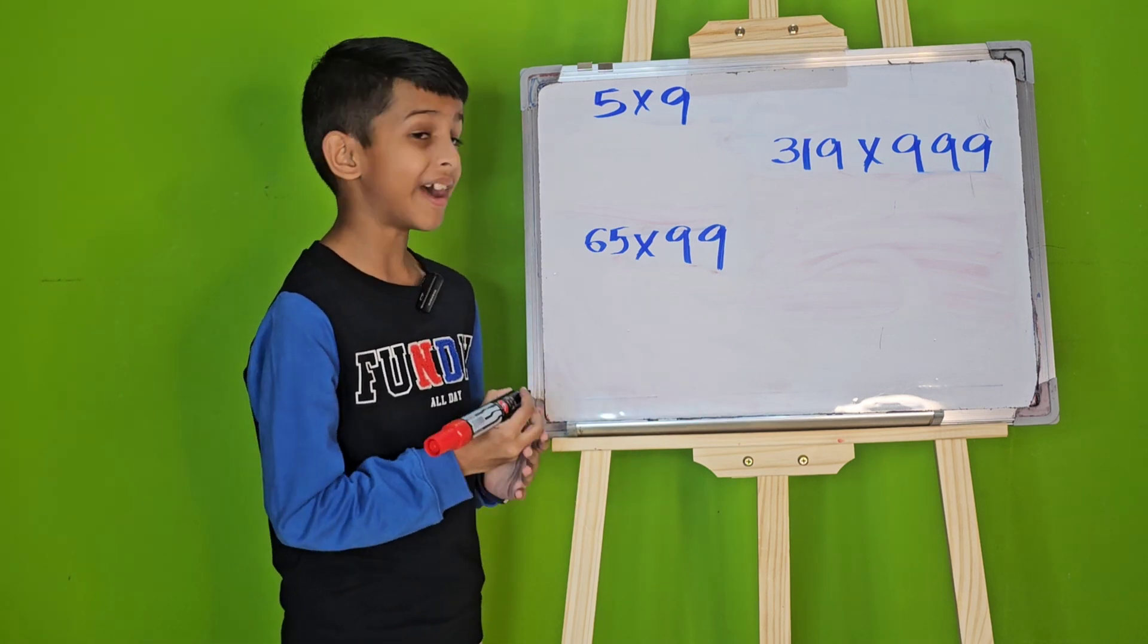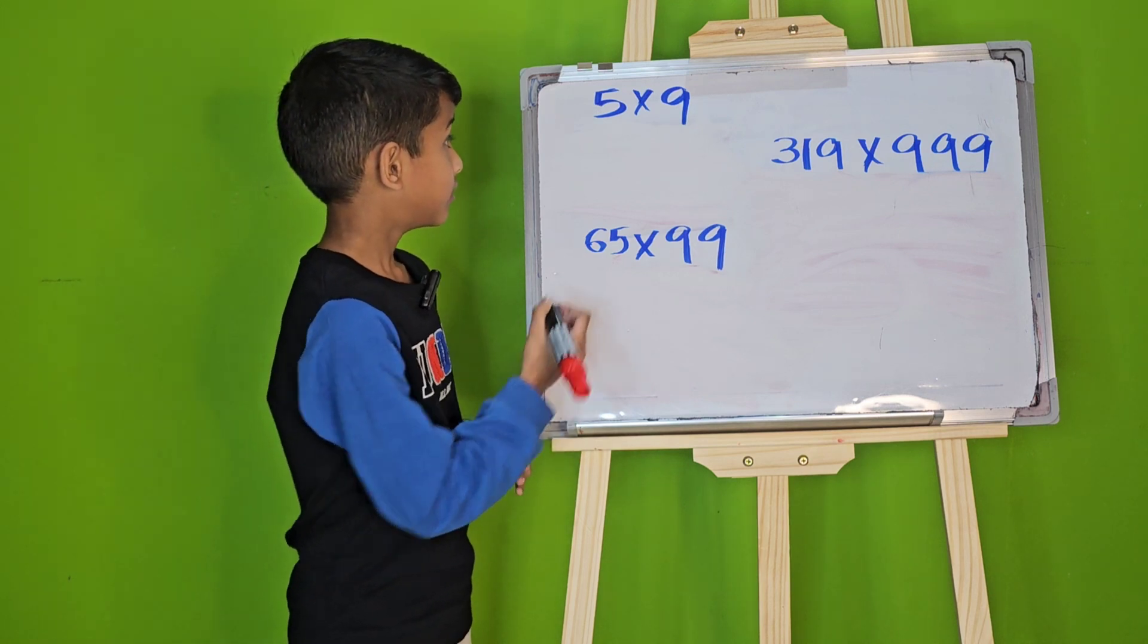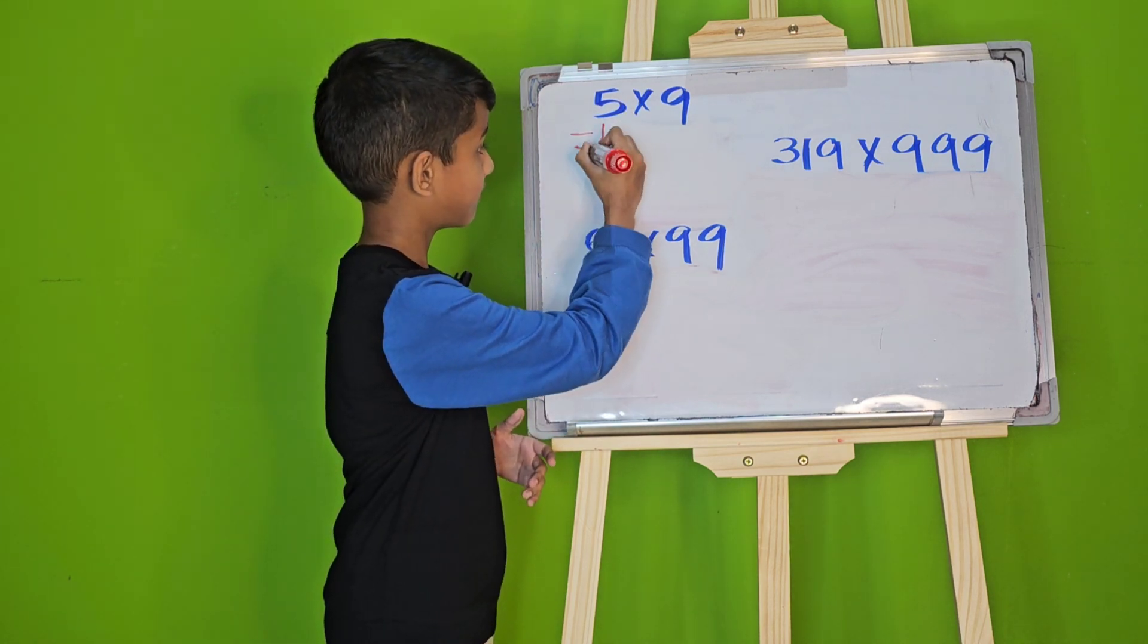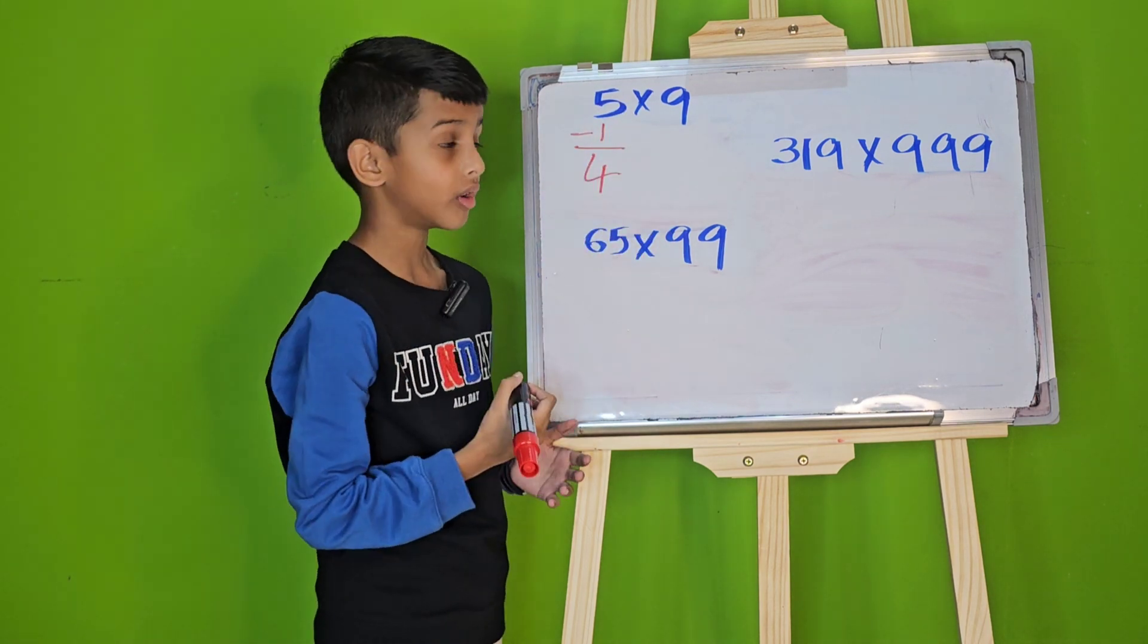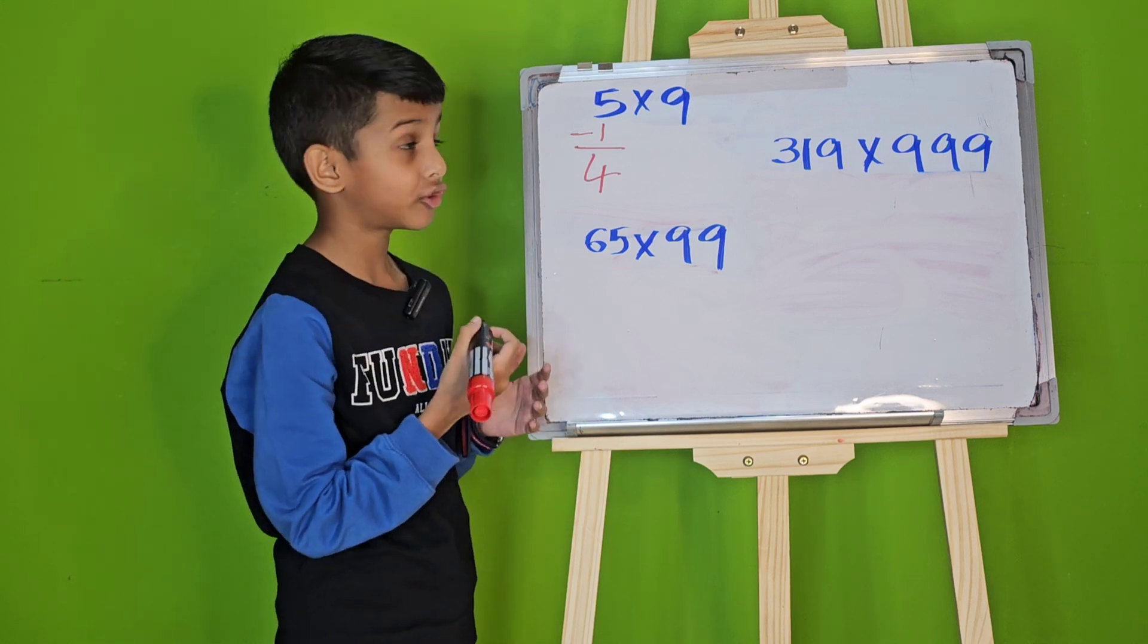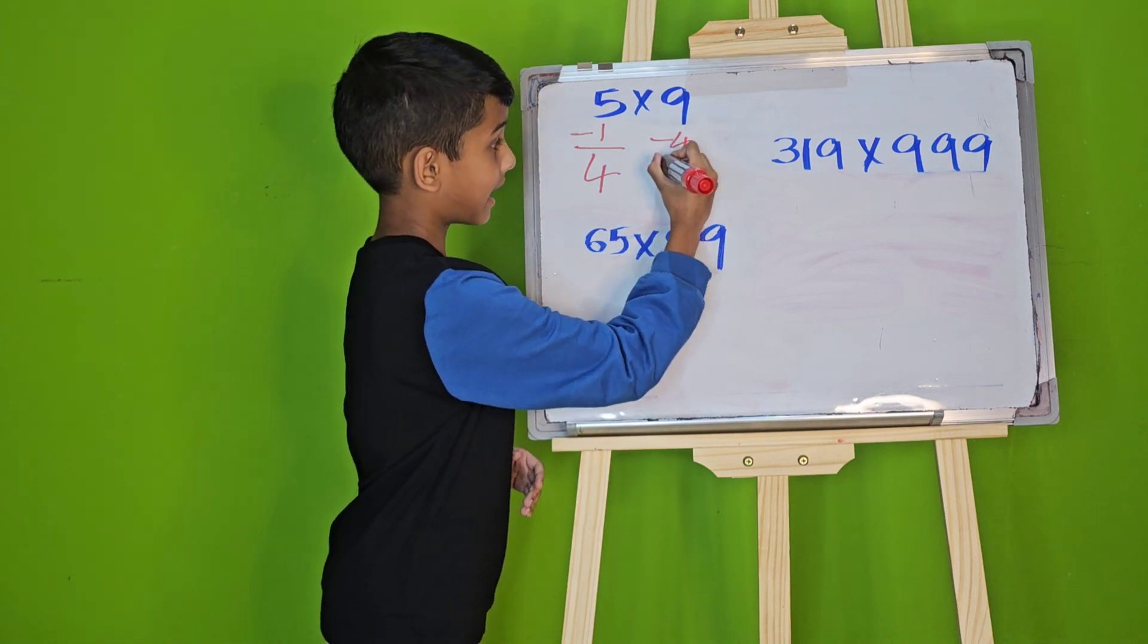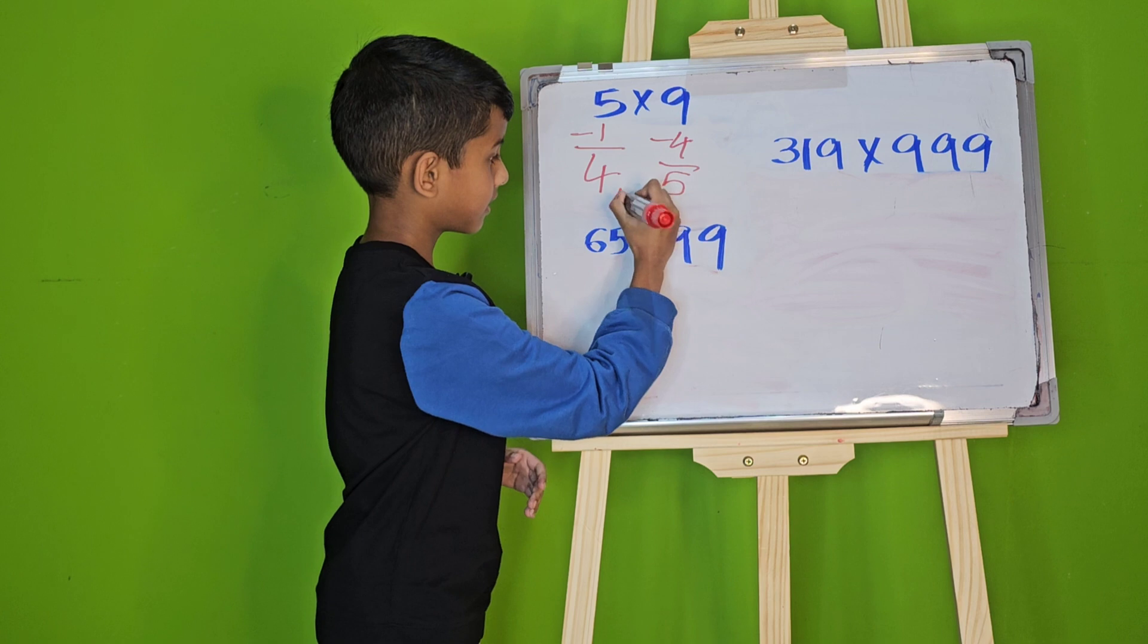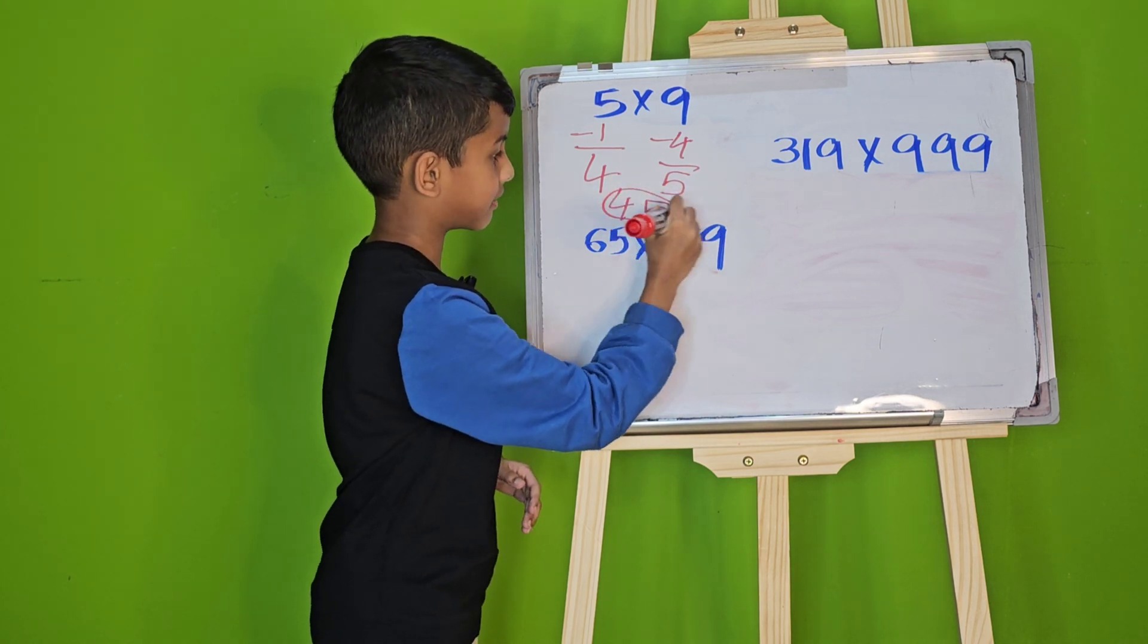Let's start with 5 times 9. First, reduce 1 from 5 and we will get 4. Now, reduce that result from 9 and we will get 5. So, 45 is our answer.